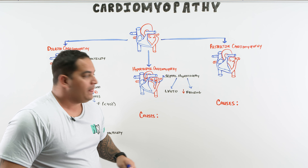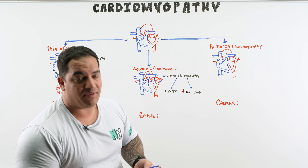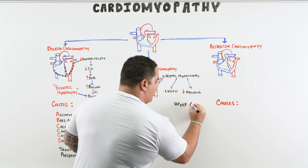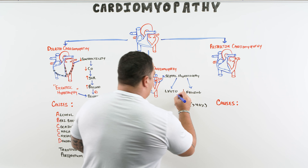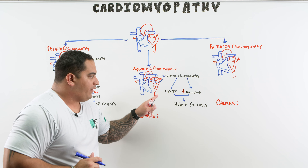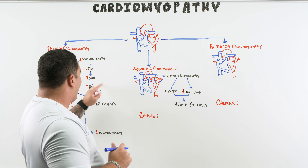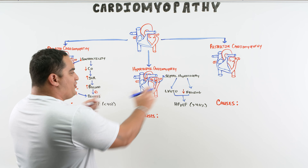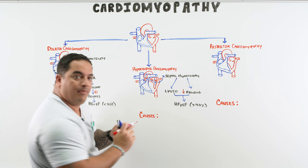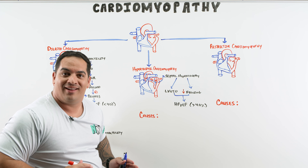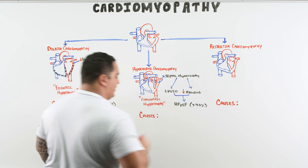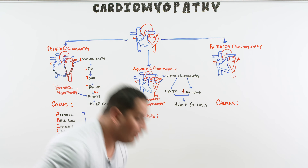At no point in this disease process does contractility go down — it just impairs filling and makes it harder to get blood out. This is an example of heart failure with preserved ejection fraction (HFpEF), where the EF is greater than 40%. The difference from dilated CM is how the sarcomeres are added: in the septum they're added in parallel on top of one another — we call this concentric hypertrophy.